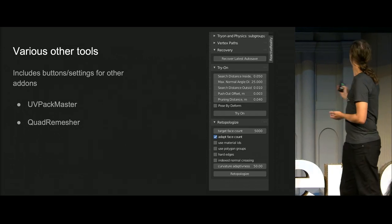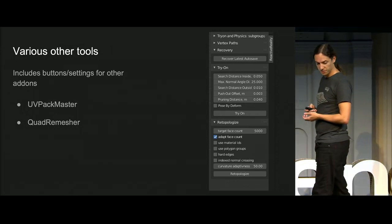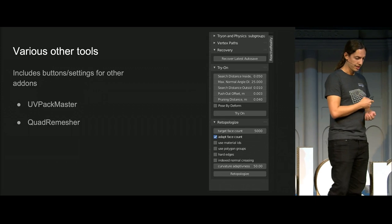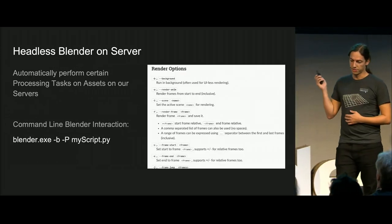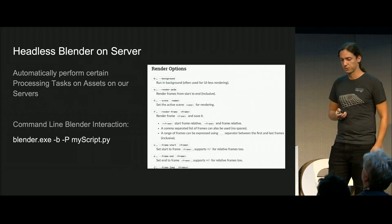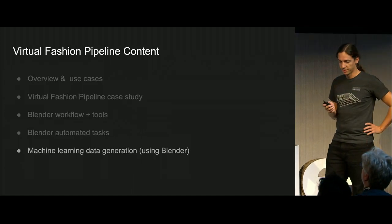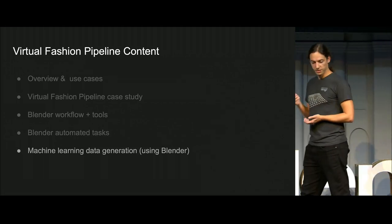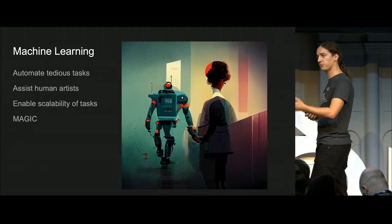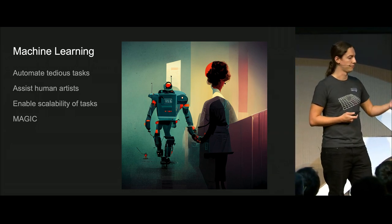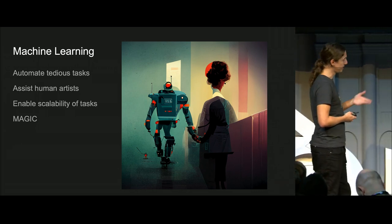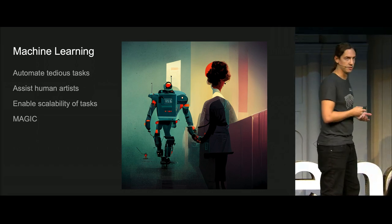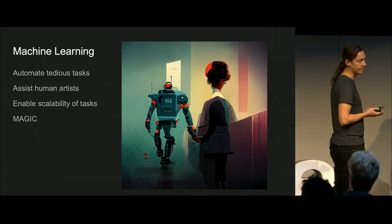We also have shortcuts for other add-ons. We use the great UV Pack Master add-on for UV layout and the Quad Remesher for remeshing. We are also running some Blender instances on servers to do automated tasks, which is really easy to do and I can recommend. And as the last point of my talk, I will talk about machine learning data generation. We are using a lot of machine learning to do very specific tasks and to aid the artists so they don't have to do tedious tasks again and again.